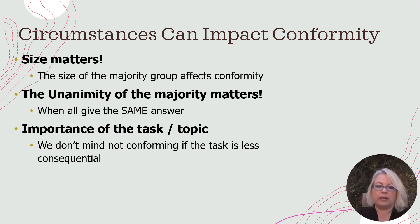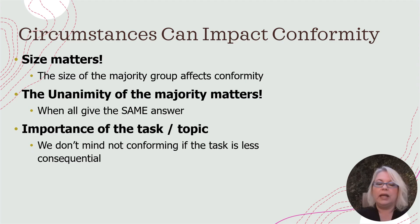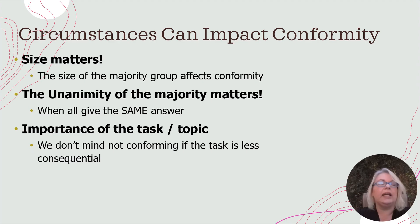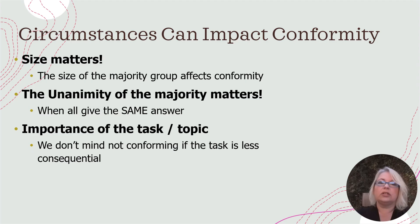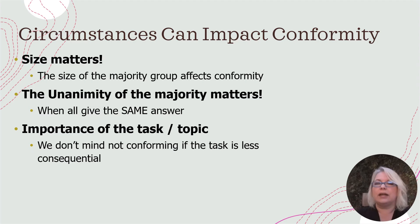The importance of the task or topic also matters. We don't mind not conforming if the task is less consequential. My husband doesn't like many roller coasters — everyone else in the family loves them — but it's not that important. He's not going to lose family members or a job, so he has no problem saying no. But think of a jury that has to unanimously decide a difficult case — it can take days or weeks because the weight of the decision is critical, and it's not easy for that minority perspective to change their mind.